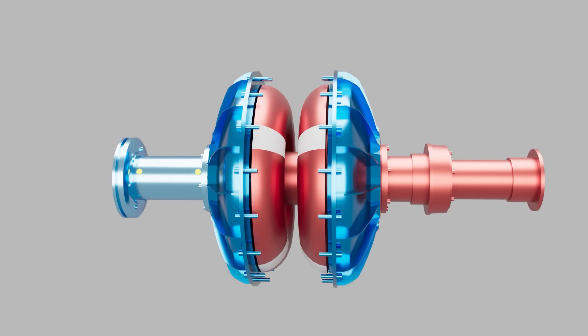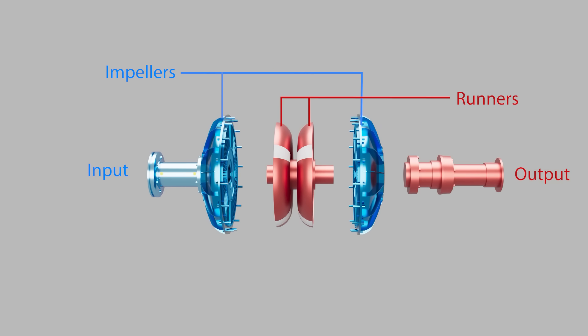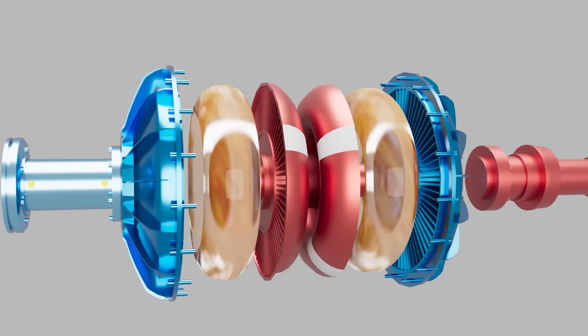The coupling has two sides. The input side with two impellers that deliver torque and the output side with two runners that receive torque. Inside, the coupling is filled with oil or hydraulic fluid.